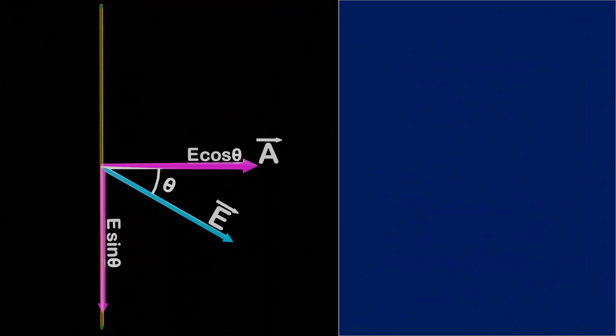As we have seen before, the electric flux is equal to EA. And in this case, we have calculated the electric field component passing perpendicular to the plane, that is E cos theta.